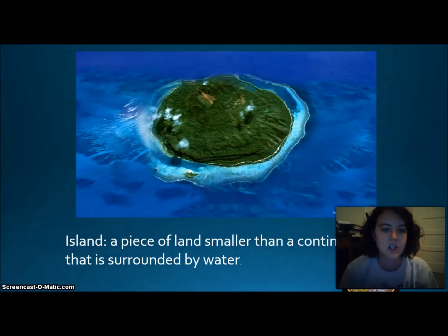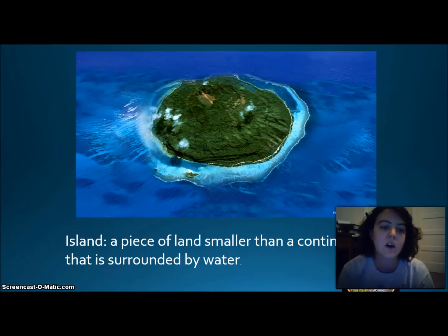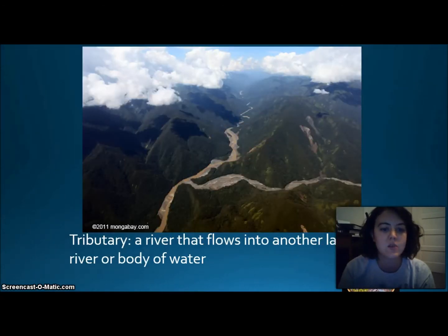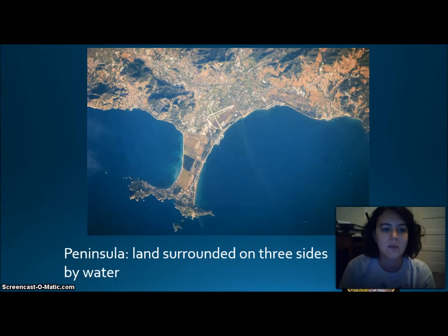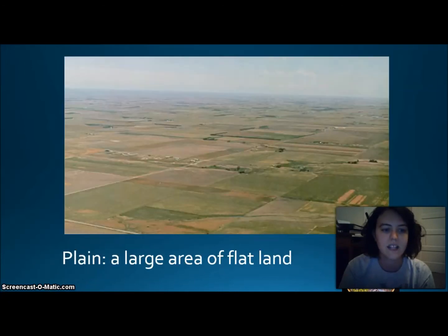Let's go through these geographic land and water formations. An island is a piece of land smaller than a continent that's surrounded by water — for example, the Hawaiian Islands or Japan. A tributary is a river that flows into another larger river or body of water. A plateau is a large, relatively flat but elevated area of land, usually in the basin and range region. A peninsula, like Florida, is land surrounded on three sides by water. A plain is a large area of flat land, like in Kansas.